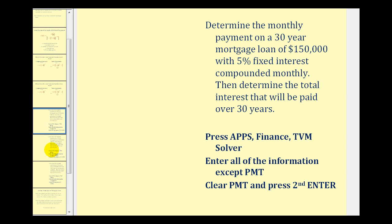So let's go ahead and take a look at our first example. Here we're going to determine the monthly payment for a 30-year mortgage loan of $150,000 with a 5% fixed interest compounded monthly. And then we'll determine the total amount of interest paid over the 30 years.